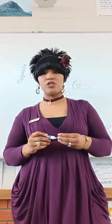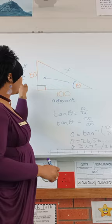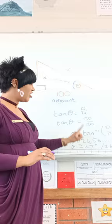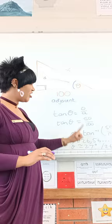So to recap: step one is to choose the correct ratio. Then you substitute. Then you press shift with the fraction on your calculator, and your final answer is the angle. Good luck with the activity.